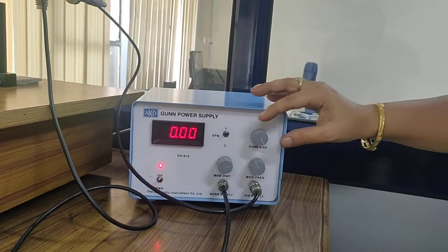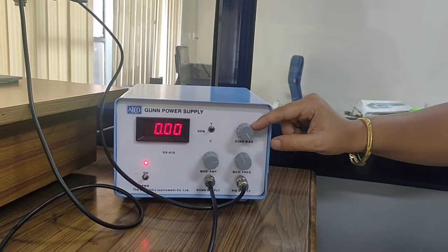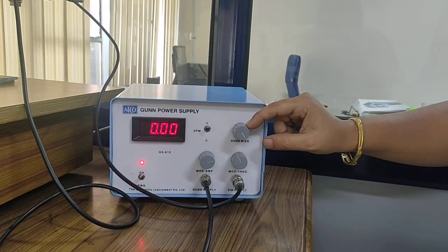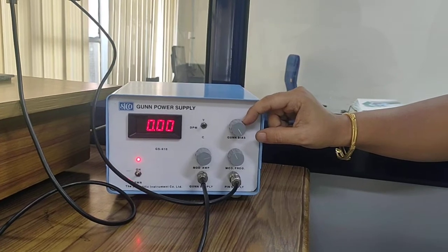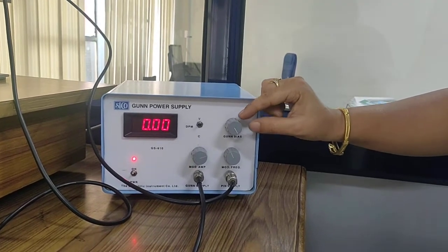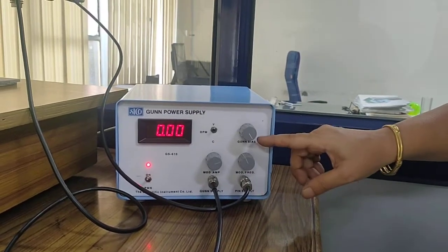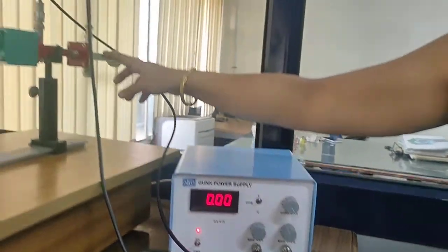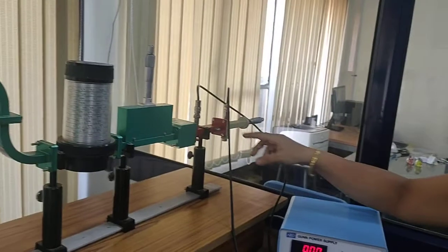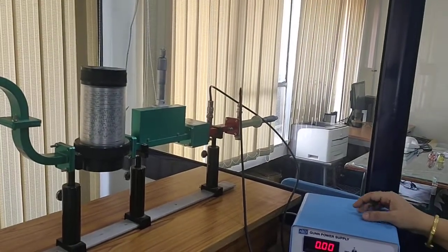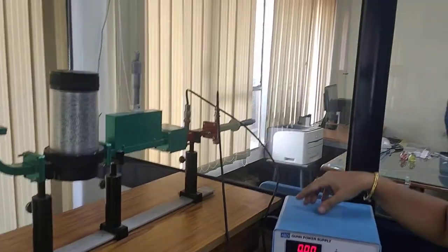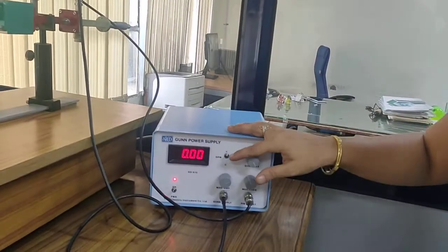After changing the mode to voltage and current, we can measure the voltage and current values. This is the Gunn bias voltage which we will vary. The rest of the setup is the same as other experiments. Let's see how readings can be taken.